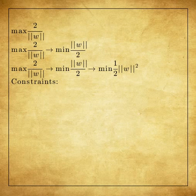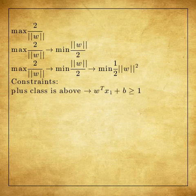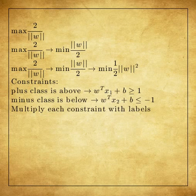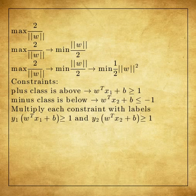What about the constraints? Well, we have two constraints. First, the plus class object should be above the border and the minus class object should be below the border. If we multiply the constraints with their class labels the inequalities become very similar and easy to work with.